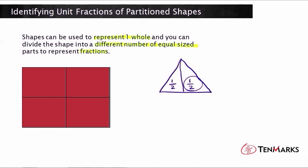Let's take a look at this rectangle over here. We have one large rectangle — the rectangle represents one whole. It has been divided into four equal sections. So if I shade one of these sections and I want to find out what fraction represents this shaded section — well, there are four equal parts, and there's one part that's shaded, which means the shaded portion is one-fourth of the entire rectangle.